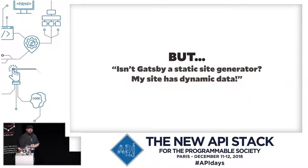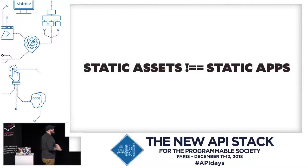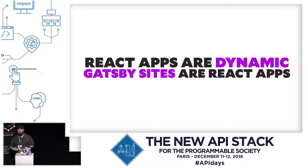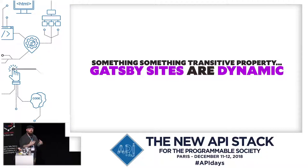One common pushback we get is: Gatsby is a static site generator, but my site has user accounts, authenticated routes, live updating data — something dynamic. I want to point out something extremely important: static assets does not mean static apps. When you serve a React app, you can make an asynchronous call to load more data. When we rehydrate to a React app, you get all those benefits. React apps are dynamic despite being just a JavaScript file, and Gatsby sites are React apps once they get to the browser — so Gatsby sites are dynamic.